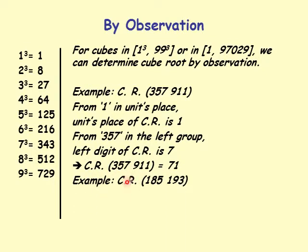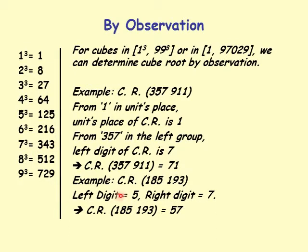Another example here. Cube root of 185193. From 3 in the unit's place, I got a 7 in the unit's place for cube root. Left digit is 5. 185 is between 125 and 216. That's 5 cubed here, 6 cubed here. So it's a 5, right digit is 7. 57 is the cube root of 185193. We use this table and this is my result by observation.